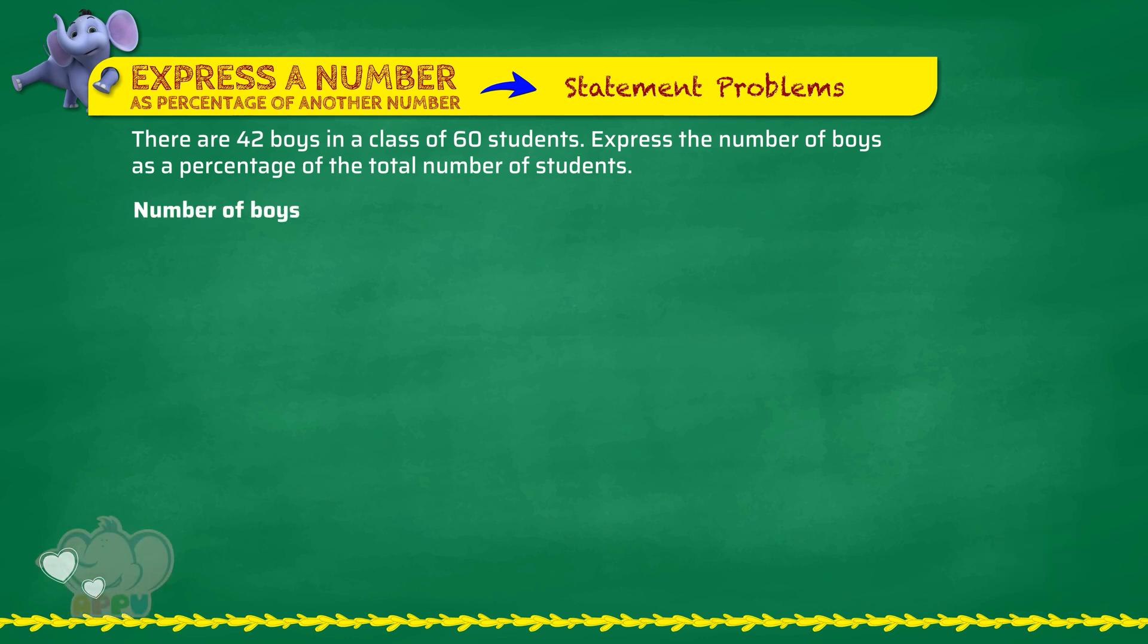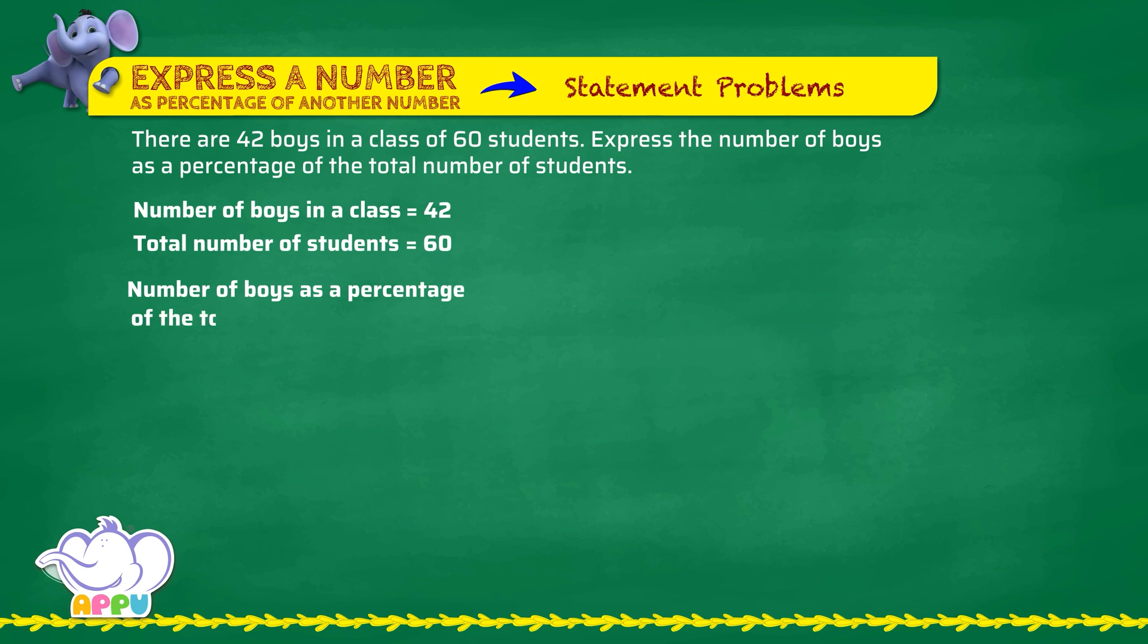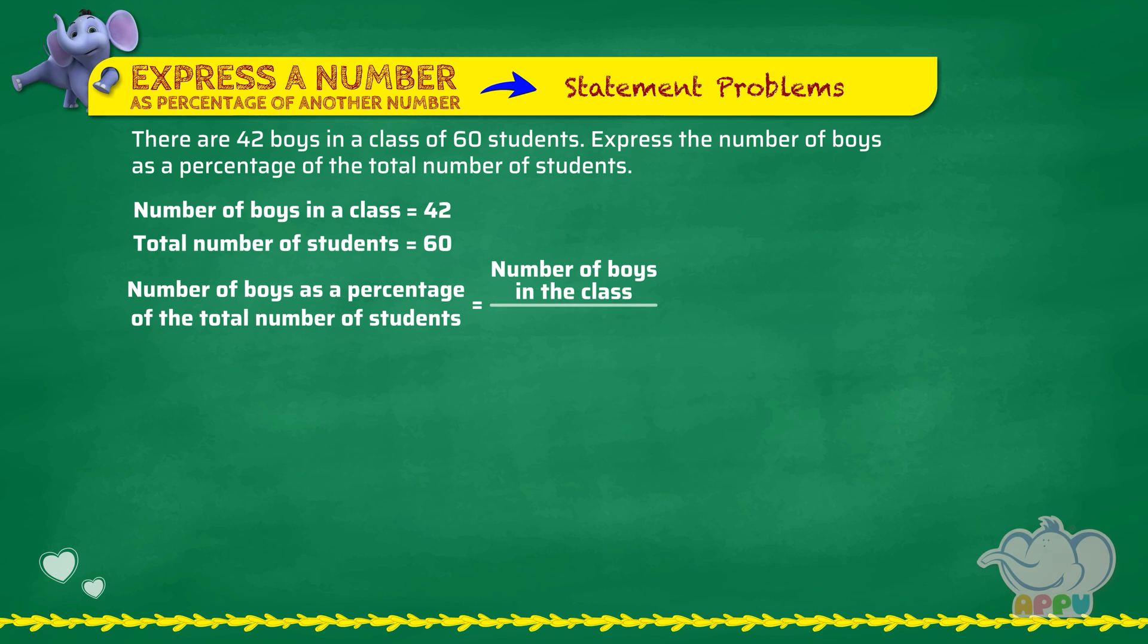Number of boys in a class equals 42. Total number of students equals 60. Number of boys as a percentage of the total number of students equals number of boys in the class by total number of students times 100. So, number of boys as a percentage of the total number of students equals 42 by 60 times 100.